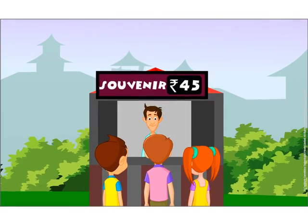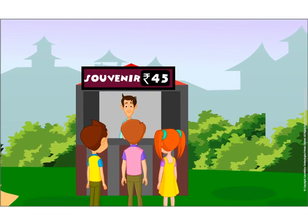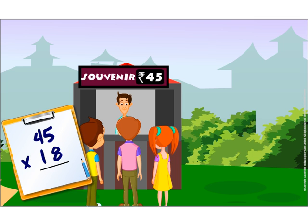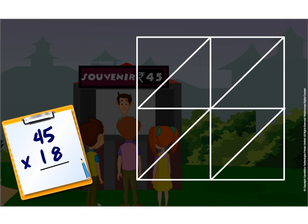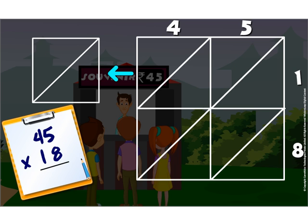On their way out, John and his friends buy some souvenirs. They buy 18 items and have to pay Rs. 45 for each item. To find the total amount they need to pay in the souvenir shop, we have to multiply 18 with 45. Let us use the lattice method. For this, we draw a square and then divide it into 4 equal boxes. Now we draw a diagonal across each of these 4 smaller squares. Let us begin by writing the number 45 here and the second number 18 on the right side.